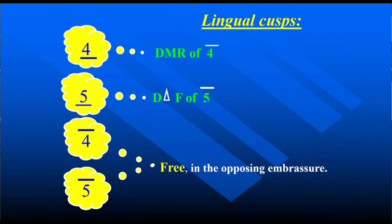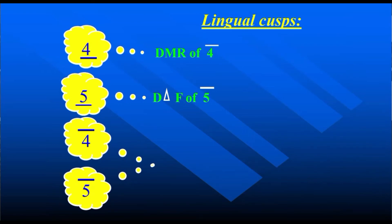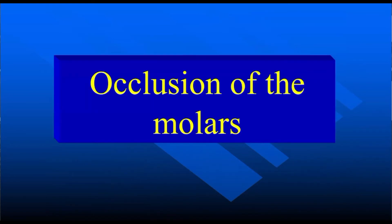Summary of premolars: the buccal cusp is free in the opposing embrasure — upper four and five free, opposite the embrasure between four and five and between five and six. Lower four and five buccal cusps contact the mesial marginal ridge of the opposite upper tooth. Lingual cusp of upper four contacts the distal marginal ridge of lower four; upper five contacts the distal triangular fossa of lower five. The only exception is upper five in contact with the distal triangular fossa of lower five.